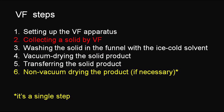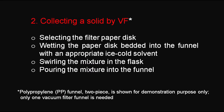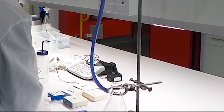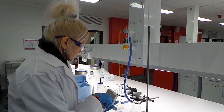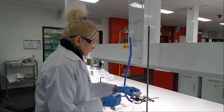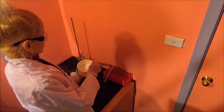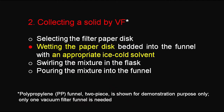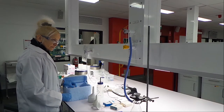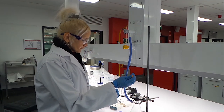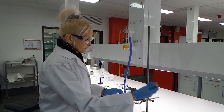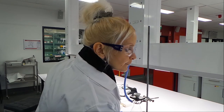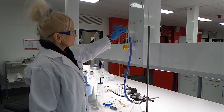Now we are ready to start collecting a solid by vacuum filtration. We need to select a suitable filter paper disk — there are many kinds with different characteristics, so make sure you select the right one for your application. A filter paper disk should be small enough to remain flat but large enough to cover all the holes in the bottom of the funnel, and the edge of the disk should not extend up the sides. It is essential to wet the filter paper disk placed in the funnel with a small amount of an appropriate ice-cold solvent to create a seal between the paper disk and the funnel. Then apply a gentle vacuum and check to make sure that air is being drawn through the paper disk.